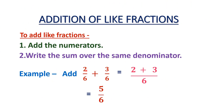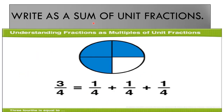Here also, we are adding only the numerators and keeping the denominator as it is, so the answer is 5 by 6. Now, write as a sum of unit fractions. A unit fraction has 1 as its numerator. So 3 by 4 can be represented as 1 by 4 plus 1 by 4 plus 1 by 4, which equals 3 by 4.